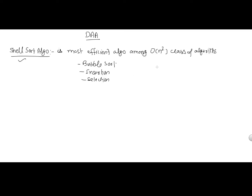Shell Sort has an approximate running time of O(n^(3/2)), which equals O(n^1.5), and that is less than n². So this is the most efficient algorithm in this class. This algorithm is also called the diminishing increment sort algorithm.